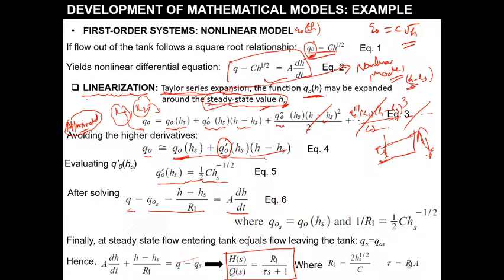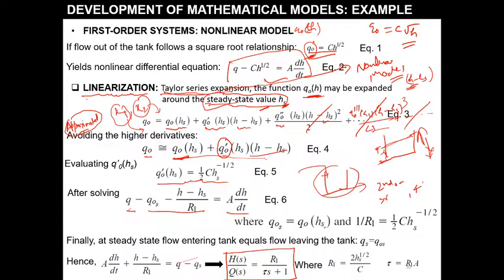The order will not change because this is a single tank system. If two tanks are cascaded — either in interacting or non-interacting form — the model becomes second order. Three tanks give a third-order system, four tanks give a fourth-order system. For a single tank, the model is first order: R1 divided by (tau·s + 1), where tau equals A·R. For the tank system, tau always remains A·R, where R is the characteristic of the valve.